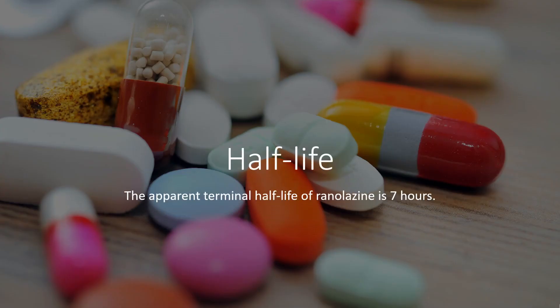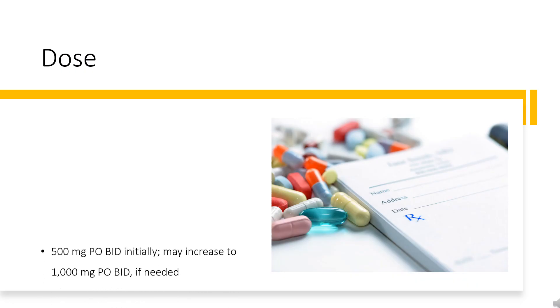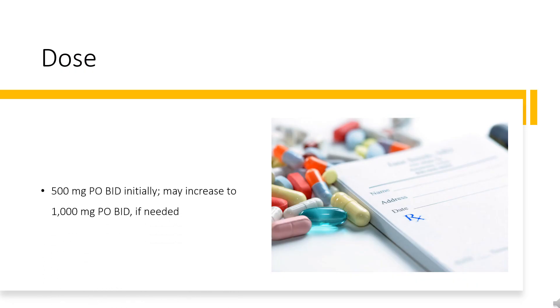Half-life. The apparent terminal half-life of ranolazine is 7 hours. Dose. For chronic angina, the indicated starting dose is 500 mg orally twice daily, which may be increased to 1,000 mg orally twice daily if needed.